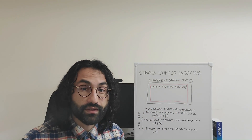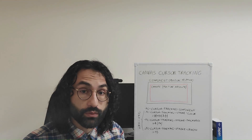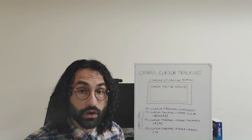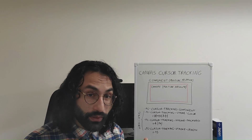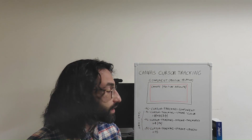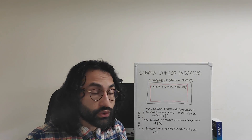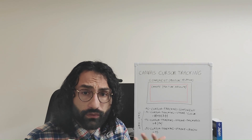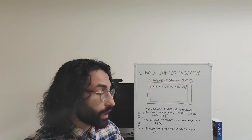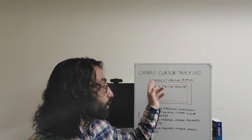Then it's just a matter of using the right attributes. The only required attribute here is the FC cursor tracking attribute with the value of component, that we need to apply to our component. All the other three attributes are just options that we can use, or we can just stick with the default values, and all three of these attributes, if we want to use them, have to be applied to the component element.